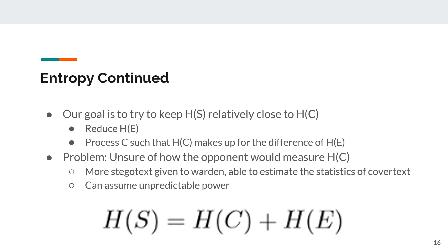With this entropy definition in mind, the clear goal is to make it such that the entropy of the stego text is relatively close to the entropy of the cover text. This can be done by reducing the entropy of the embedded message, or processing the cover text such that it makes up the difference of the embedded message's entropy. The authors don't explicitly state that the entropy of the stego text and cover text could be strictly equal, as it may fall into the realm of possibility, but this could potentially be an open question for further proof. The major problem an attacker would need to solve is how effectively the opponent is able to measure the entropy of the cover text compared to a ground truth. However, since we continue to give the warden more stego texts, the better the warden may be able to estimate the statistics of the underlying cover texts. In short, we can attempt to create stego objects that keep entropy close to the cover text's entropy to create the secure stego system and avoid detection from the warden.